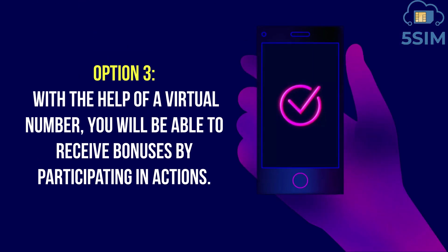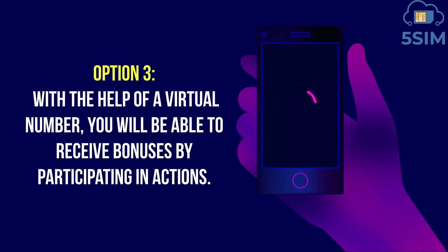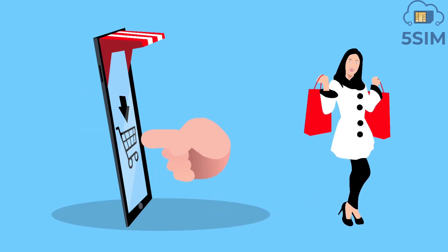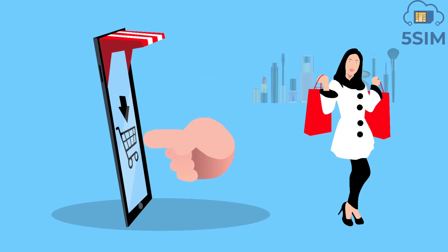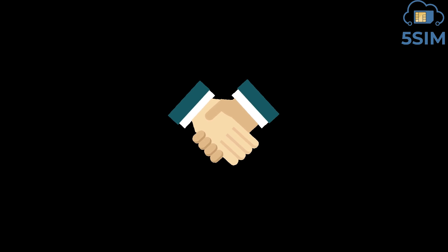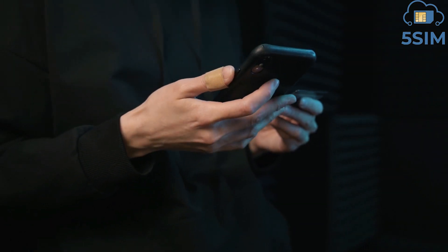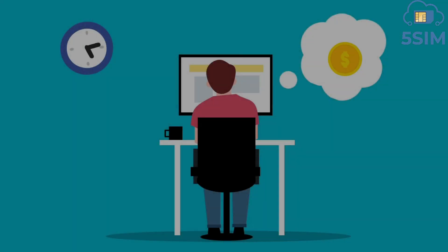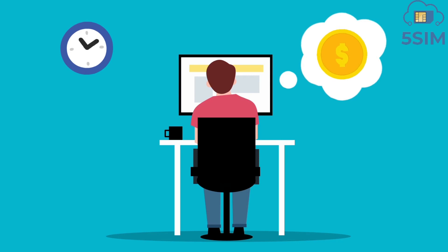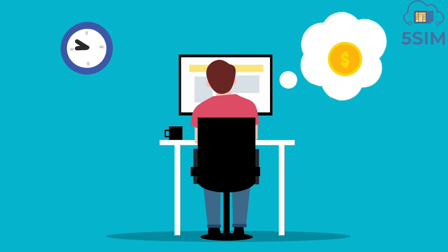Option 3: with the help of a virtual number, you will be able to receive bonuses by participating in promotions. Various services and online stores distribute gifts and discounts when registering a new user, operating on the rule of one gift per person. That's why they require a personal phone number to confirm registration via SMS. A disposable number is an opportunity to bypass all these restrictions and enjoy free bonuses in any amount.